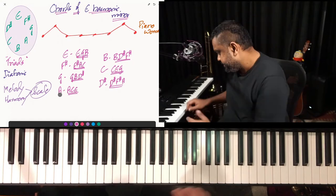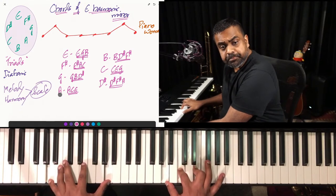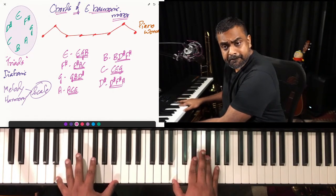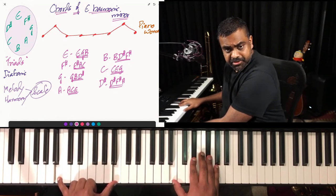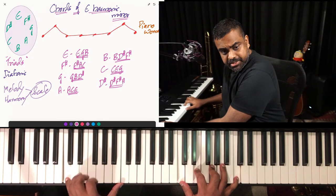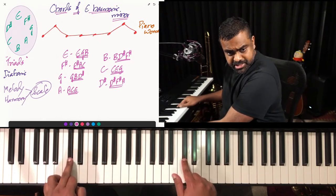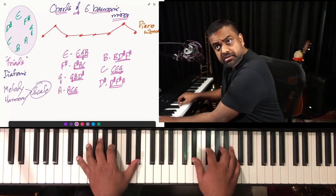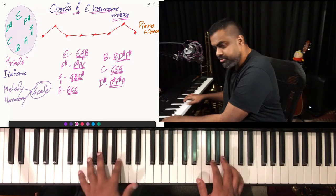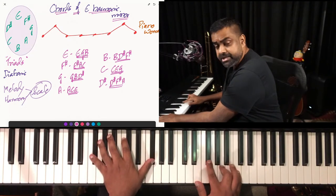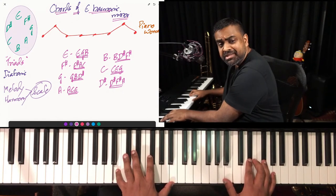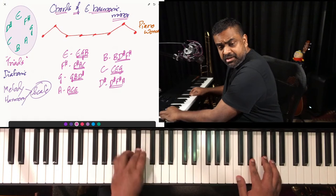Then you have the fourth chord A — that's A, C, E. The fifth chord is B, D#, F#. The sixth chord is C, E, G. The harmonic minor has a skip and then you do the D# chord. Let me play all the triads again: E, G, B; F#, A, C; G, B, D#; A, C, E; B, D#, F#; C, E, G; D#, F#, A — and back to resolve.